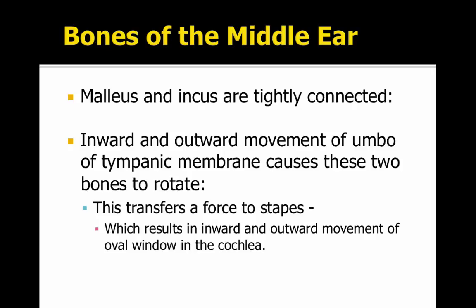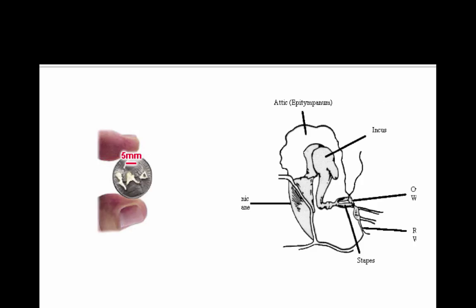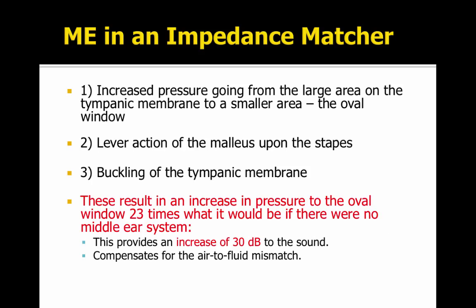The malleus and the incus are tightly connected. The inward and outward movement of the umbo of the tympanic membrane causes these two bones to rotate, so a compression wave in the ear canal pushes on the tympanic membrane and starts this chain reaction through the bones. The malleus is embedded in the tympanic membrane, connected to the incus and the stapes, and the stapes footplate sits in the oval window at the base of the cochlea. Compression waves push on the tympanic membrane and start these three bones to move, and the final bone — the stapes footplate — pushes a wave of fluid into the cochlea.